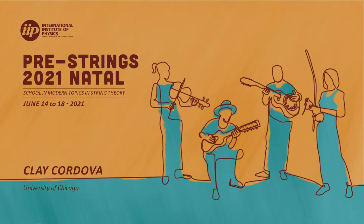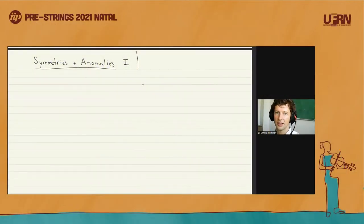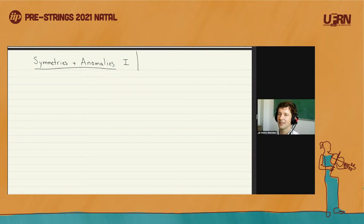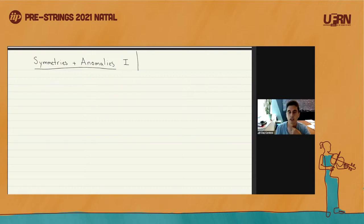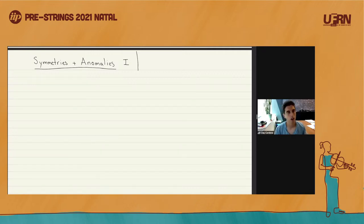The afternoon session of the press rings, and it's a great pleasure to have today Clay Cordova, who will tell us about recent progress in symmetries and anomalies. So without further ado, please, Clay. Thank you very much for the invitation. I'm sorry I can't be there with everyone in person, but hopefully again soon. In these three lectures, I'll tell you a little bit about some modern developments, some recent developments in the theory of symmetries and anomalies.